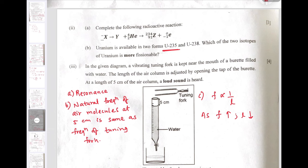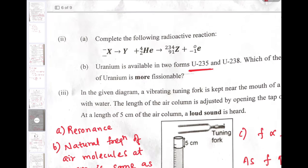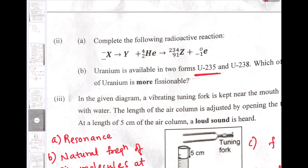Next question: complete the following radioactive reaction. If you look at this reaction very carefully, atomic number and mass number on both sides of the reaction must always be conserved. Using that fact here, on extreme right side the atomic number is 90. So here in this particular part also, atomic number has to be 90.